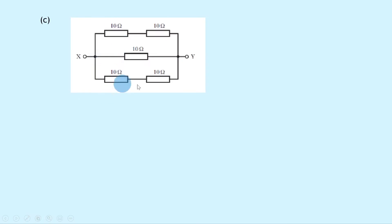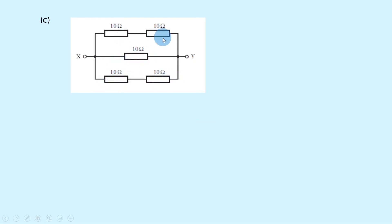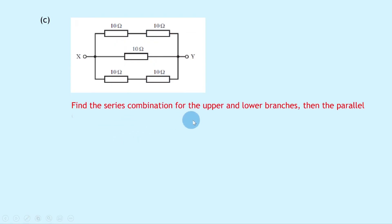Part C shows a combination circuit between points x and y, where we have two resistors in series in the upper branch, one resistor on its own in the middle, and then another two resistors in series in the lower branch. All three of these branches are in parallel with each other. So we need to find the series combination for the upper and lower branches, and then the parallel combination.